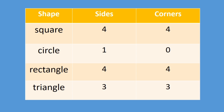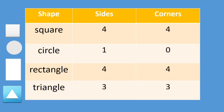I have counted and saw that the square has four sides and four corners. The circle has one side and zero corners. The rectangle is the same as the square — four sides and four corners. And a triangle has three sides and three corners.